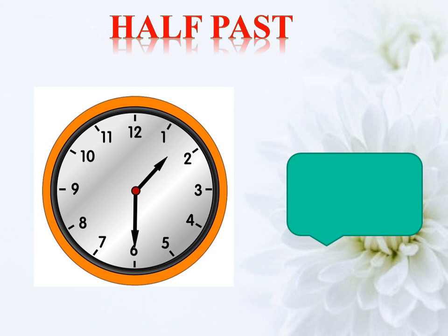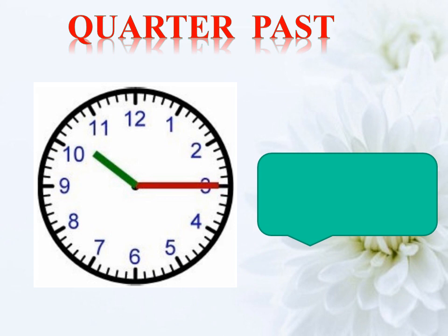Half past — very good. When the long hand points at 6, it means it is half past. The big hand — the minute hand — moves from 12 to 6. It is half past the hour because the big hand has moved half of the way around the clock face. Here the short hand is between 1 and 2, so the time is half past one.